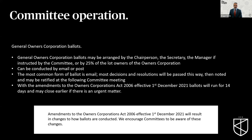General owners corporation ballots may be arranged by the chairperson, the secretary, the manager if instructed by the committee, or by 25% of the owners. They can be conducted by email or by post, with email being most common. Most decisions and resolutions will be passed this way and are noted and may be ratified at the following committee meeting. With the amendments to the owners corporations act coming into effect as of the 1st of December 2021, ballots will run for 14 days and may close earlier if the matter is urgent.